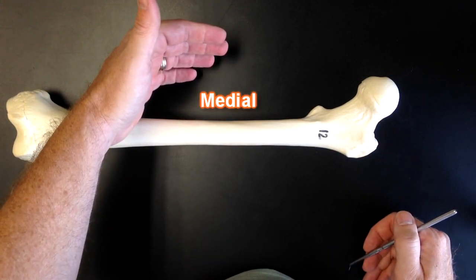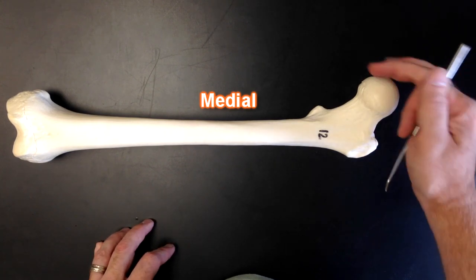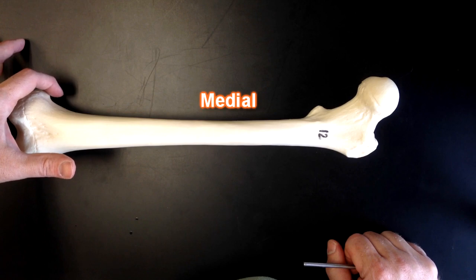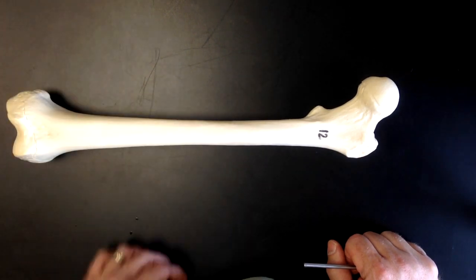The medial aspect of the femur is going to be this side here where the head is going to articulate with the pelvis. We're also going to see this structure down here known as the adductor tubercle which is also going to be medial.